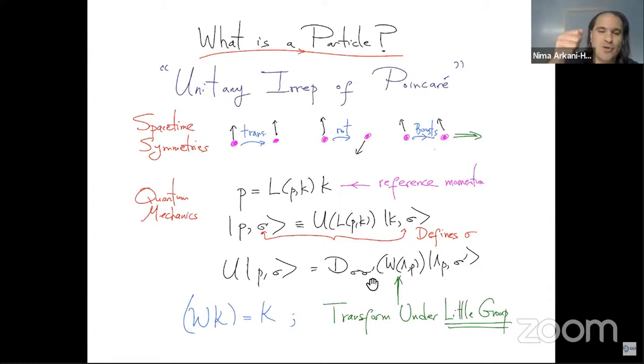And those are what correspond to the additional degrees of freedom, the spin degrees of freedom, which transformed not under Lorentz transformations, but under the little group of Wigner's little group of the Lorentz transformations.